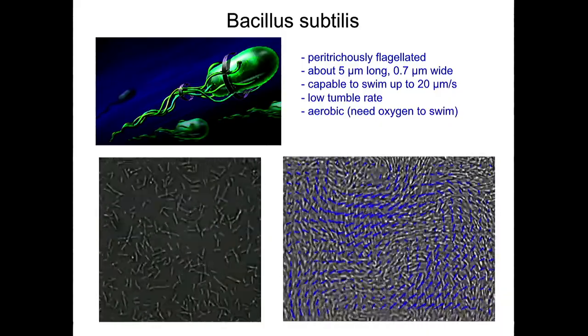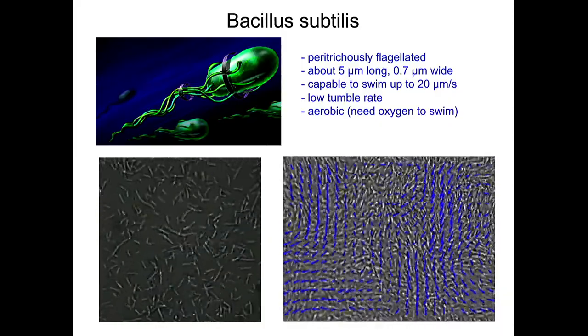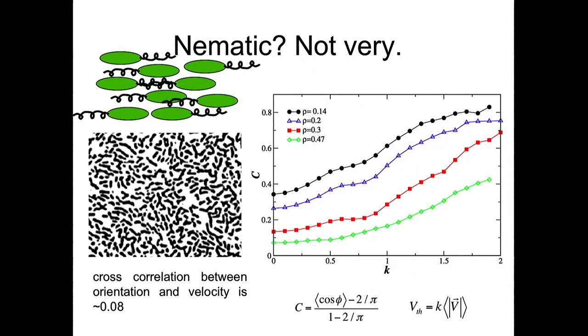And you might think that since they swim collectively, probably bacteria should be aligned parallel to each other, and it should look like a nematic material. But in reality, this is not the case. It turns out if you zoom in on a fraction of this collective behavior, bacteria are not very well aligned. So the orientation is pretty much random. While there is like a long-range orientational order for velocities, there is no long-range orientation for bacterial orientation.